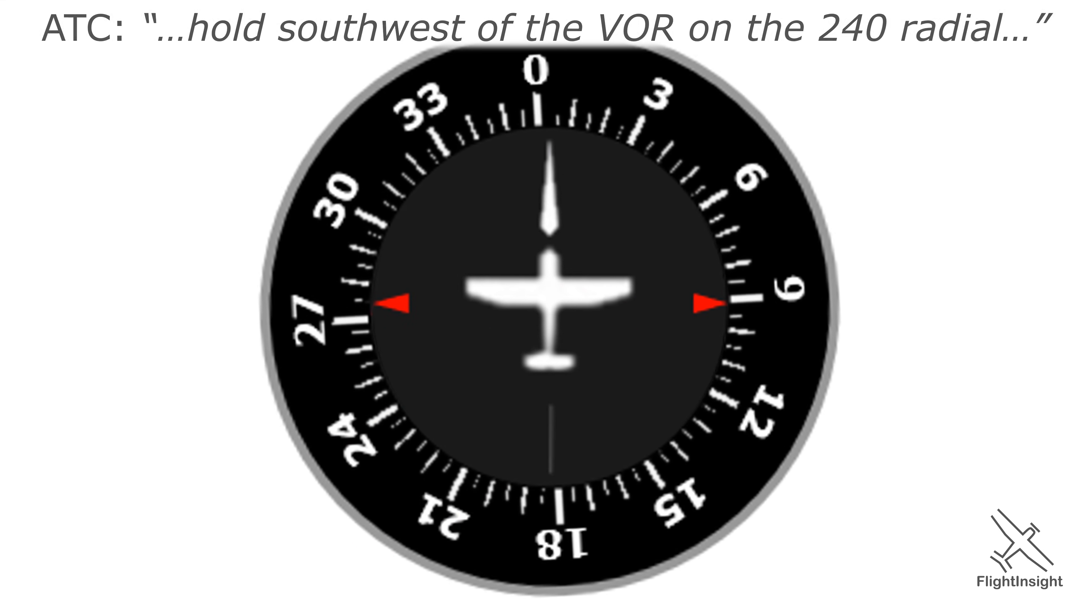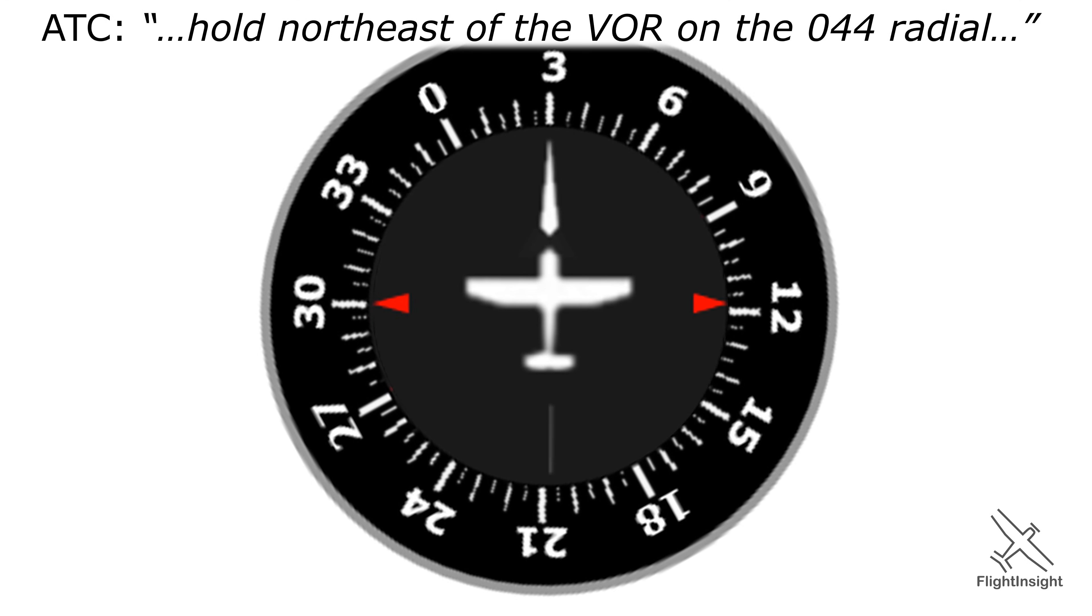Let's look at another one. We're on this heading and ATC tells us to hold on the 044 radial. Drop the fix, draw the line from 044 to the fix, right turns, what do we do with this? The best entry is the teardrop, which looks like this. Into the fix, 30 degree offset, right turn around to intercept inbound.